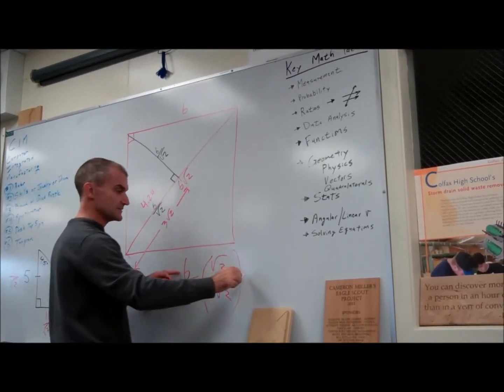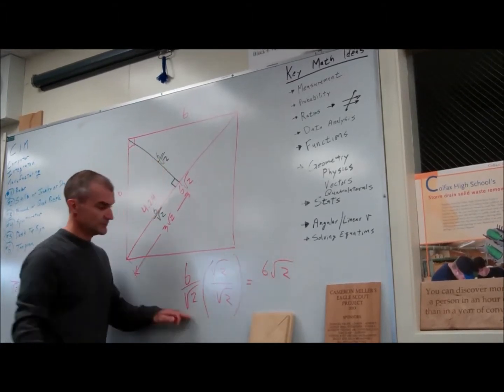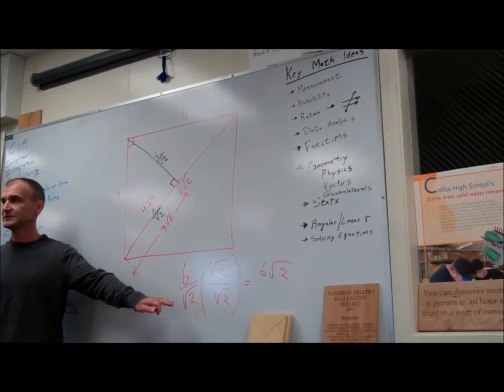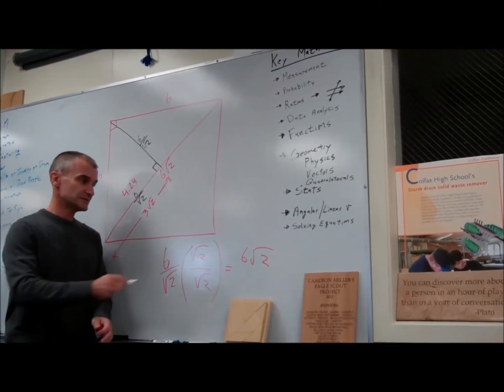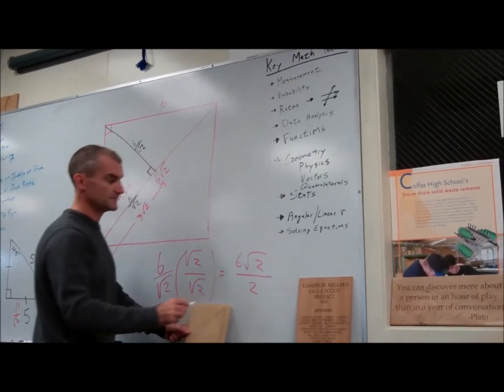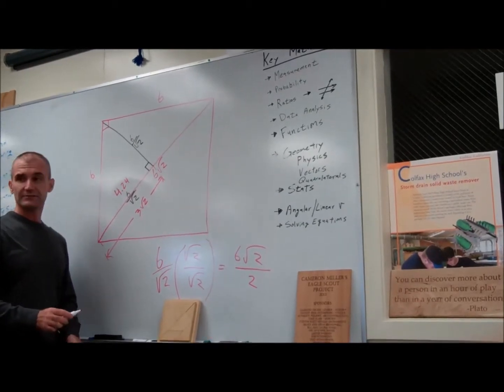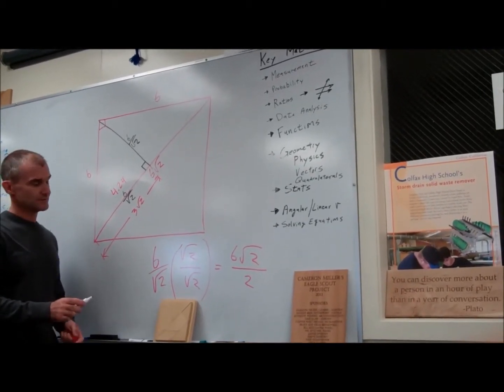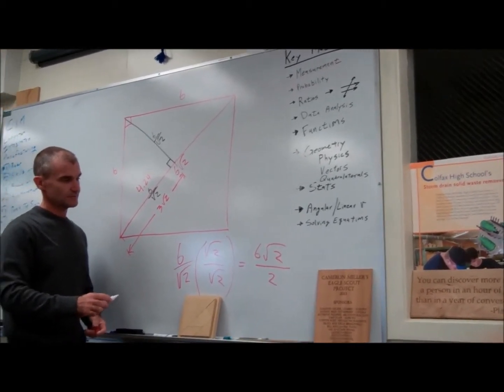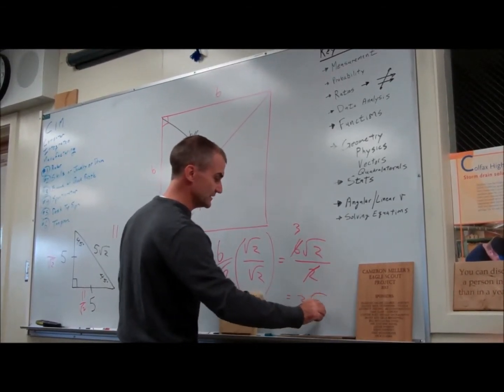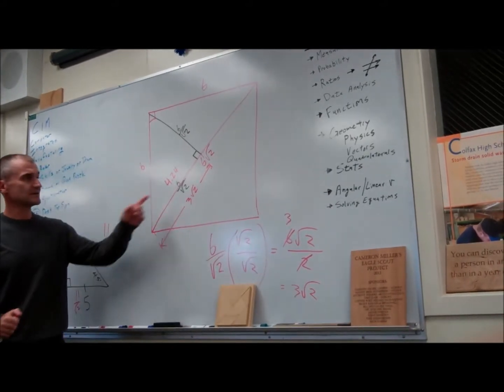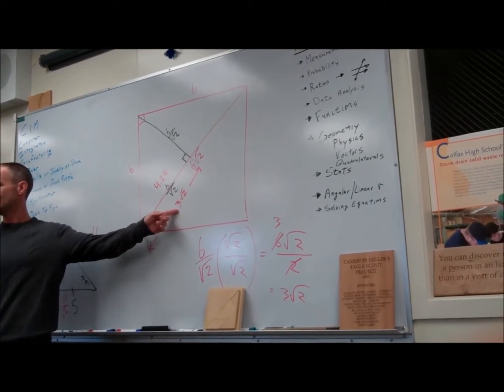Then I have six root two in the numerator. I have root two times root two, which is two. Root four, which is two. So I have six root two over two. Then what do I do there? Yeah, two goes in here once and in here three times, and it gives me three root two. So I can see six over root two and three root two are the same thing.